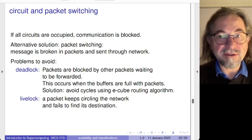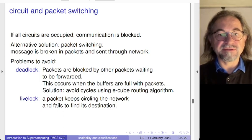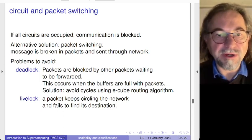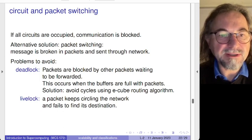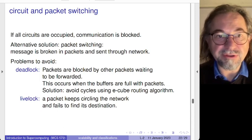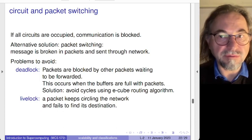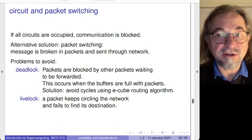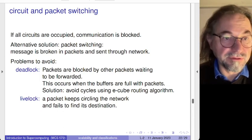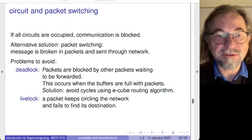Typically if switches don't have buffers, the packet is forwarded and circulates the network until it reaches its destination. Deadlock may occur. The e-cube routing algorithm addresses this: when a packet is not at its destination, you move to an adjacent node by flipping bits, avoiding deadlock and avoiding situations where processors are waiting for messages from other processors that are also waiting. There is also the problem of livelock, where a packet never reaches its destination and keeps circulating forever.